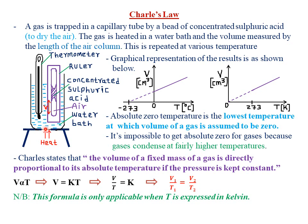This experiment is repeated several times by heating water to different levels and recording the values of temperature with the corresponding length of the air column at various temperatures. The results are usually tabulated, and after tabulating the results, we plot a graph — a graphical representation of the results. When we heat, we expect the air to expand, hence the volume — the length of the air column — will also increase, meaning that the volume of the gas increases as the temperature increases.